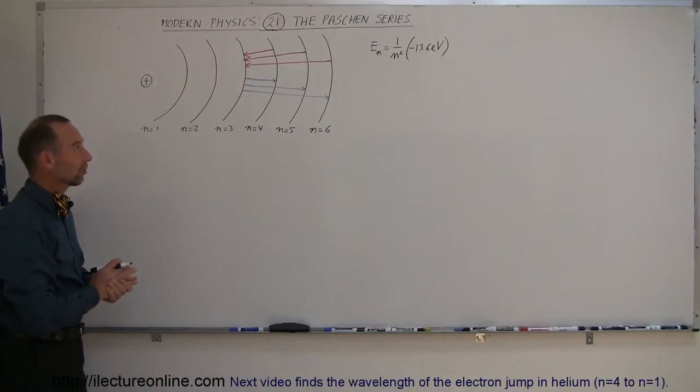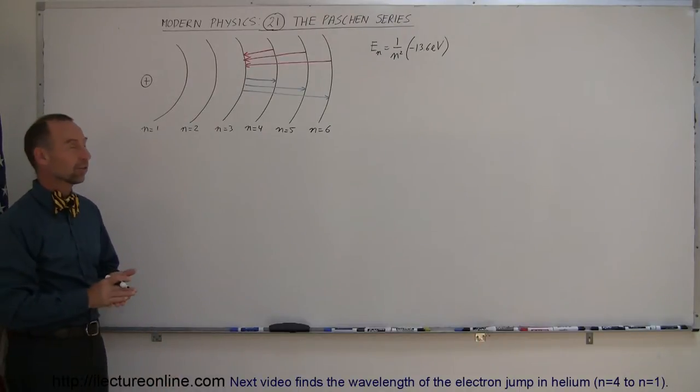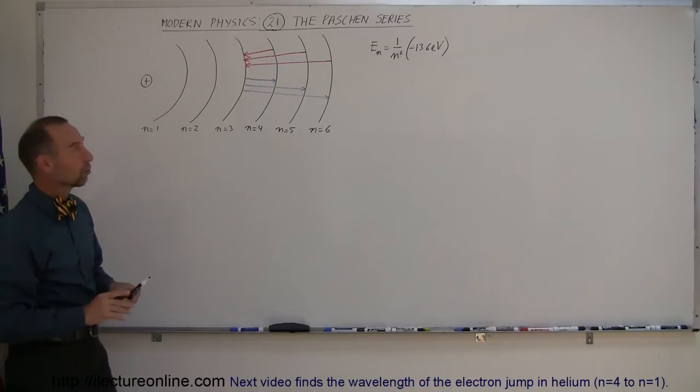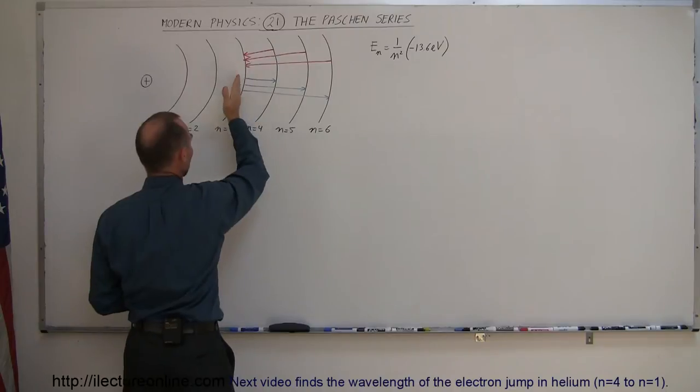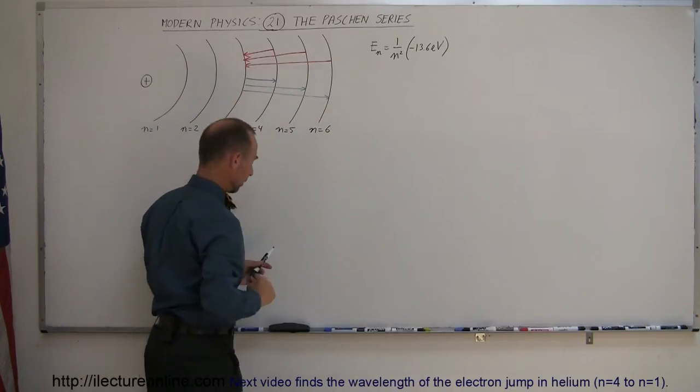Another interesting series of jumps is called the Paskin series. The Paskin series are the electron jumps where the electrons jump from higher orbits down to the third energy level, or from the third energy level to higher orbits.